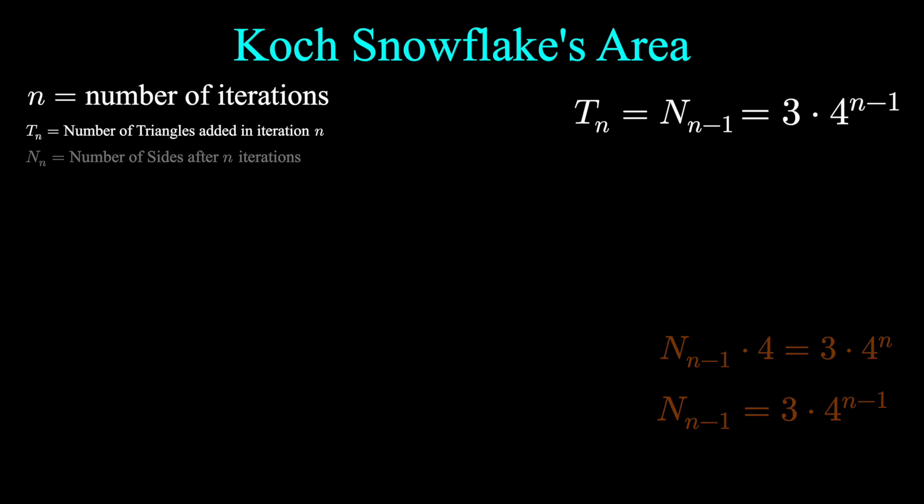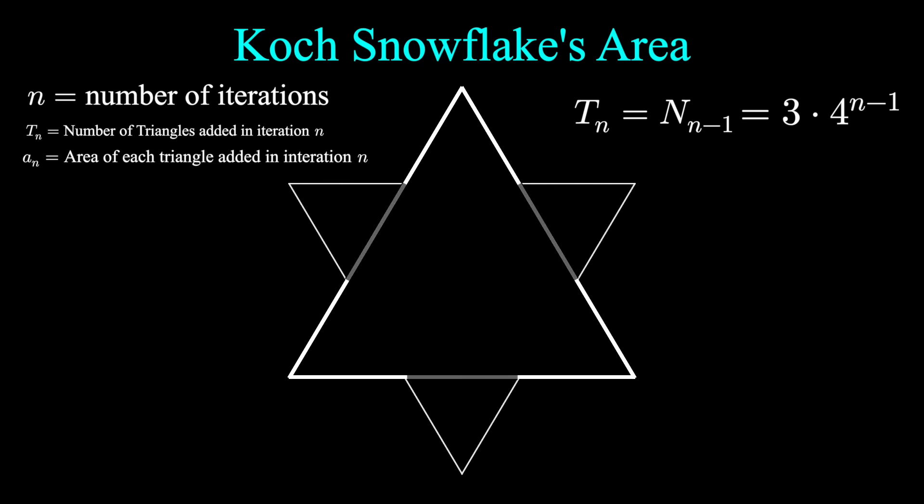What about the area of each triangle added? I'll call it A sub n. The thing to notice here is that each new triangle is one ninth the area of the triangle in the previous iteration. If we start with this original equilateral triangle, we didn't specify the original area of the first triangle, let's just call it A0, A initial. Since we divide up one of the sides into three segments, it has one ninth the area. Which means that the area of each new triangle added is A0 divided by nine to the n, n being the nth iteration.